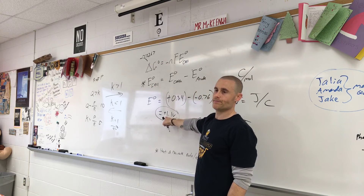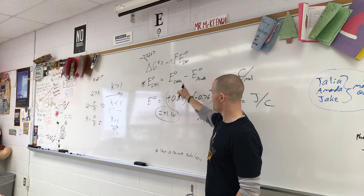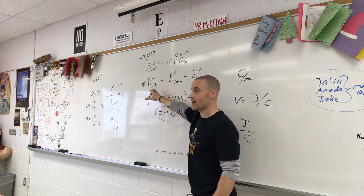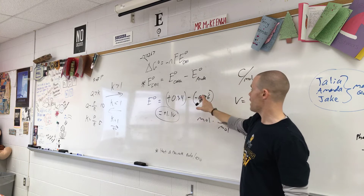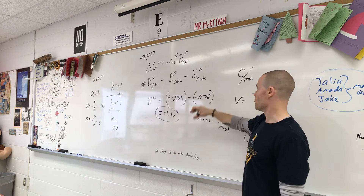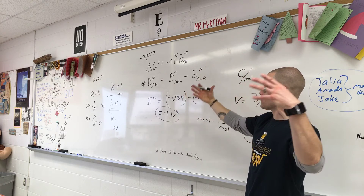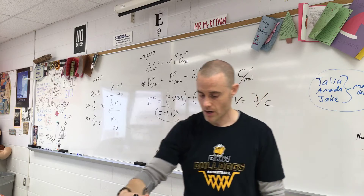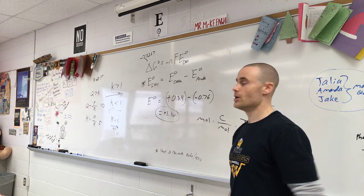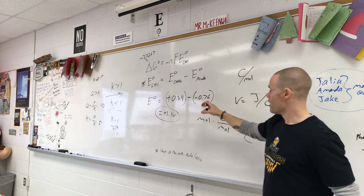What if this E-cell number was negative? Then delta G would be positive. If E is negative, the difference between the cathode and anode is not in the direction we want. When you have a positive E-cell, that's a good thing. You want your anode to have a negative voltage for the reduction potential — the more negative your anode and the more positive your cathode, the better the difference in the cell potential.